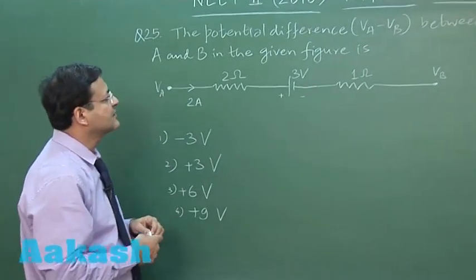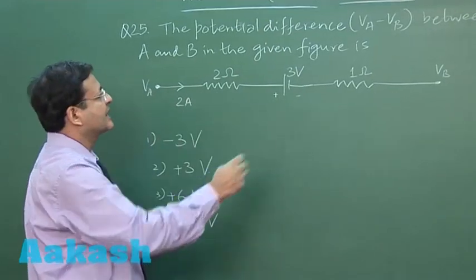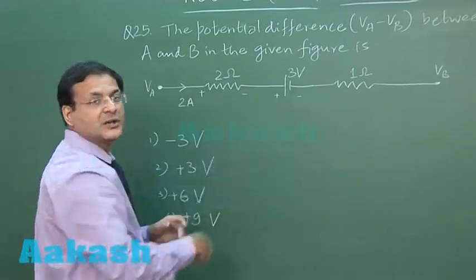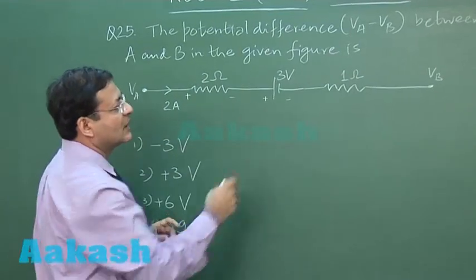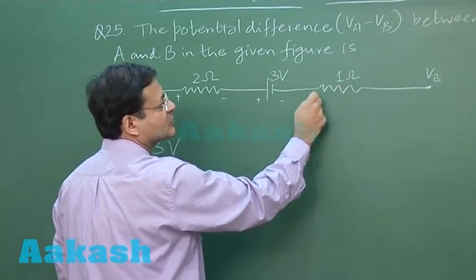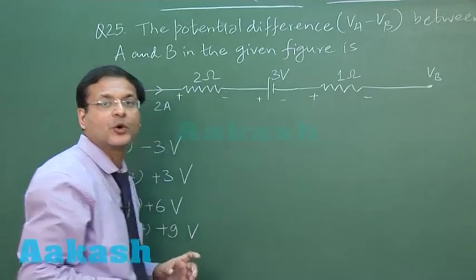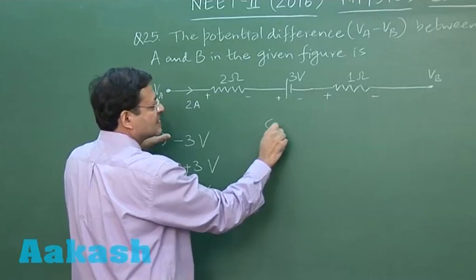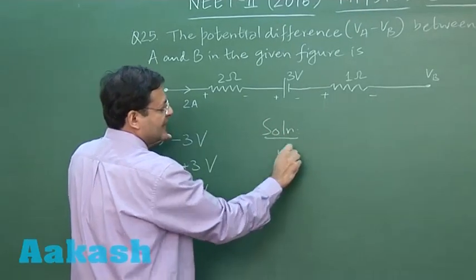So here the convention is that if current is flowing in this direction, so you can take it as higher potential, lower potential. Cell potential higher lower is already given to you, and here also if the current is flowing in this direction, so this is at higher potential and this is at lower potential.